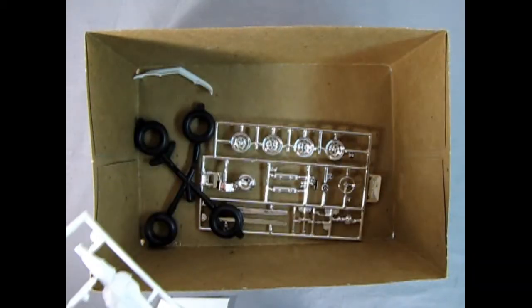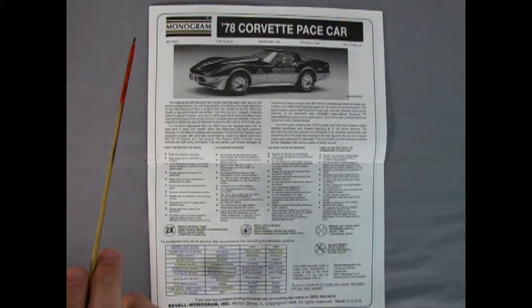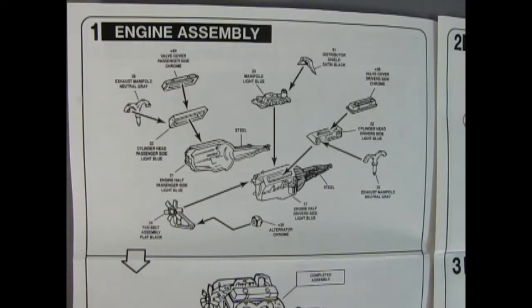Our instruction sheets for the Monogram 78 Corvette are quite large. You get this nice side view picture of the car as well as a history of the Pace Car itself, and then all the information we need to put our parts together as well as this nice paint chart down here. The box top does say that this is a skill level 3 kit but I would really give it a skill level 2 rating actually.